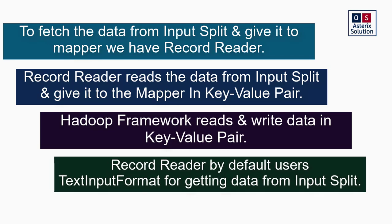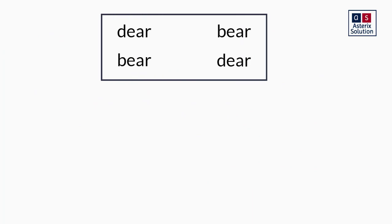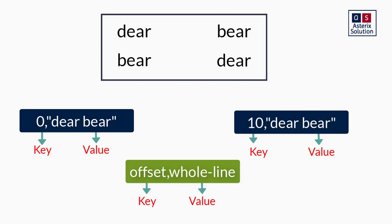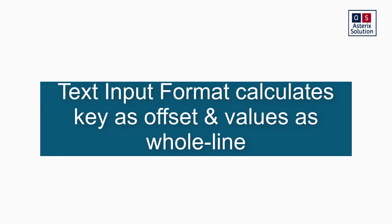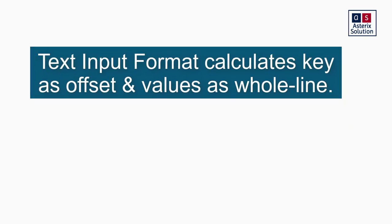The format in which data is read is called text input format. For example, in my line 'deer beer', the offset value will be zero and the whole line will be considered as the value. In the next line, the number of characters in the upper line plus one becomes the offset, and the whole line becomes the text value. So text input format calculates the key as the offset and the value as the whole line.